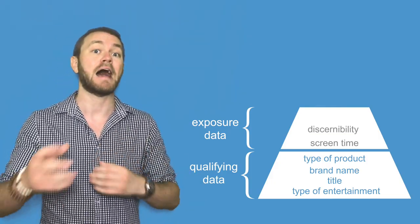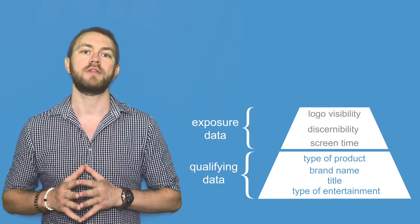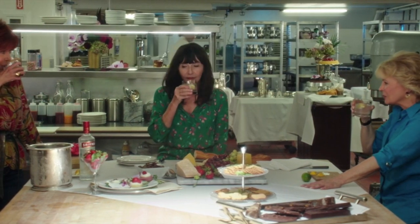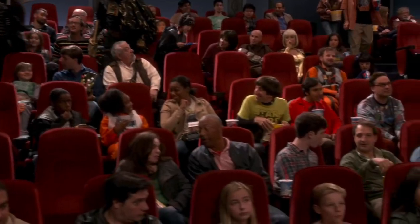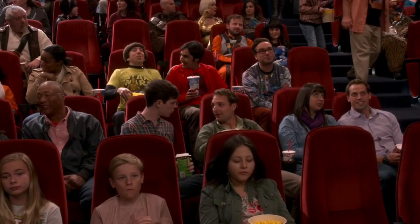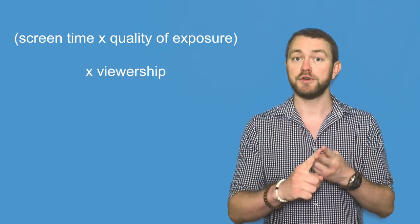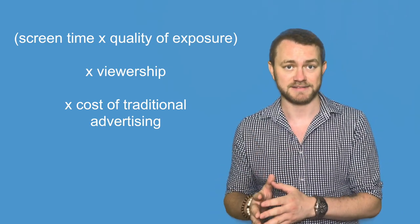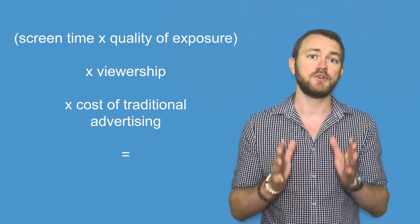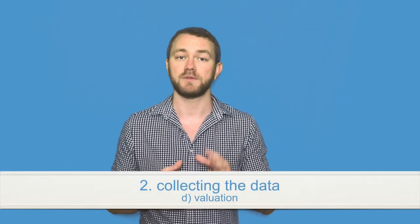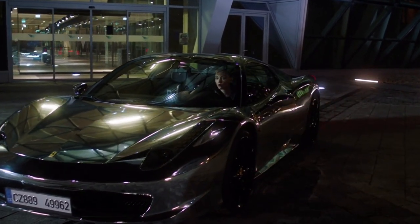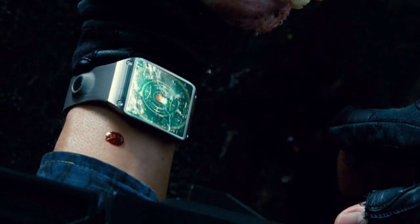The quality of exposure can include discernibility — how visible your product is — but also whether or not the logo is visible. The other critical element to evaluating your exposure is to know how many people are watching any given movie, TV show, or online content. Once you have the exposure and the viewership, you then figure out the cost of 30-second commercials on US TV — the cost of traditional advertising — and you factor all of these elements together to produce the valuation. So when someone says a product placement is valued at $1 million, they're saying that to achieve the same exposure it would have cost $1 million in traditional advertising.